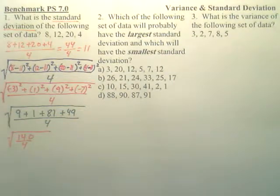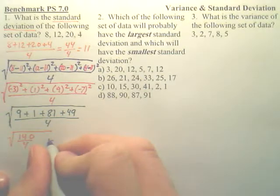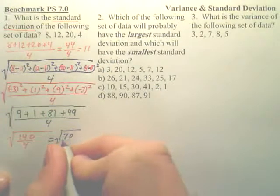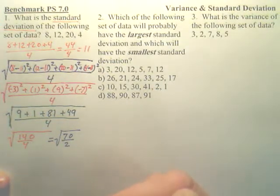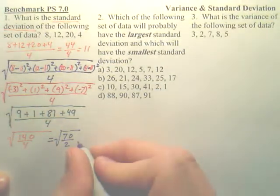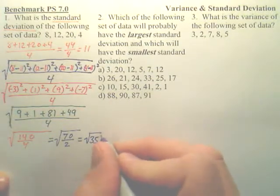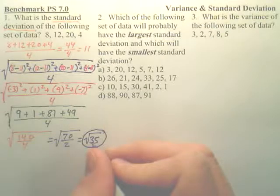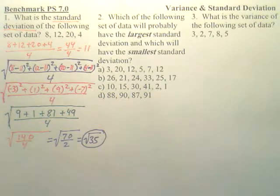This ends up being 140 over 4. You should notice at least 2 goes into both of them. When you get 2 going into both of them, it looks like we have the square root of 70 over 2, which actually reduces still, doesn't it? That would be the square root of 35. And you leave it like that. That would be a little bit less than 6, because the square root of 36 is 6. It's like 5.9, but that's good enough.